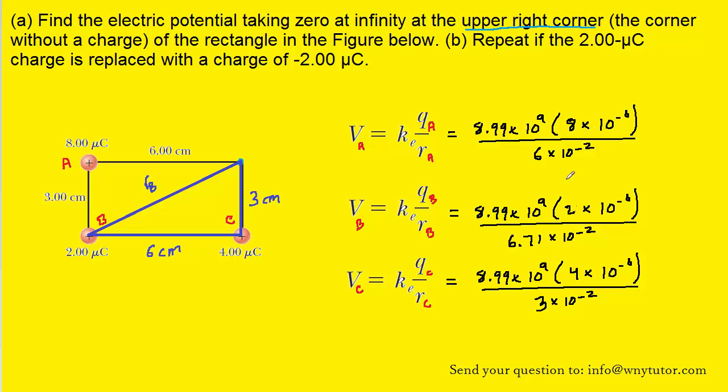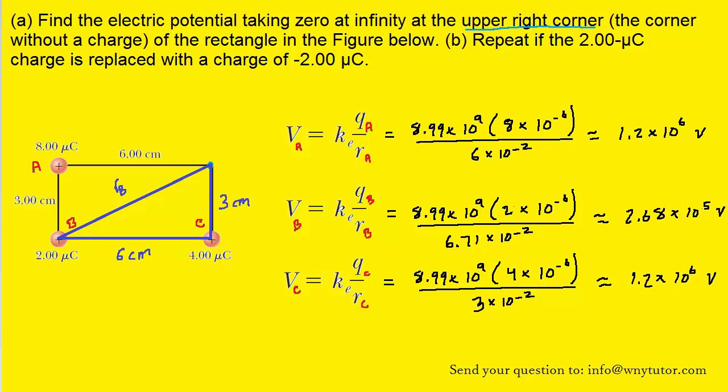Once we have all the known values plugged in, we can pick up our calculators and crunch these all down. And here we have the values. Notice the unit is in volts. And to get the total electric potential at the upper right corner of the rectangle, all we need to do is just add these values together.